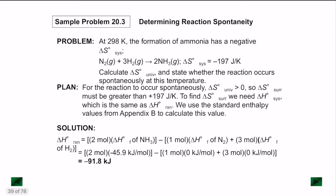So at 298 Kelvin, the formation of ammonia has a negative delta S of the system. So N2 plus 3H2 gives 2NH3, and delta S of the system is negative 197 Joules per Kelvin. They're asking us to calculate delta S of the universe and state whether the reaction occurs spontaneously at this temperature.